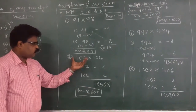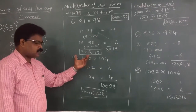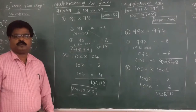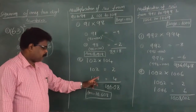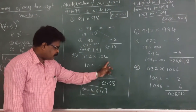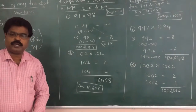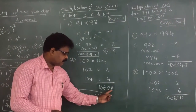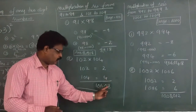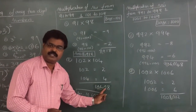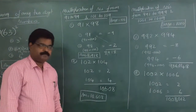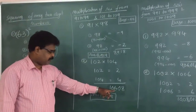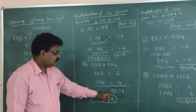Another example: 102 into 104. Subtract the base — 102 minus 100 equals plus 2, and 104 minus 100 equals plus 4. Multiply: 4 into 2 equals 8. This must be 2 digits, so write 08. Cross-add: 102 plus 4 equals 106. The final answer is 10,608.